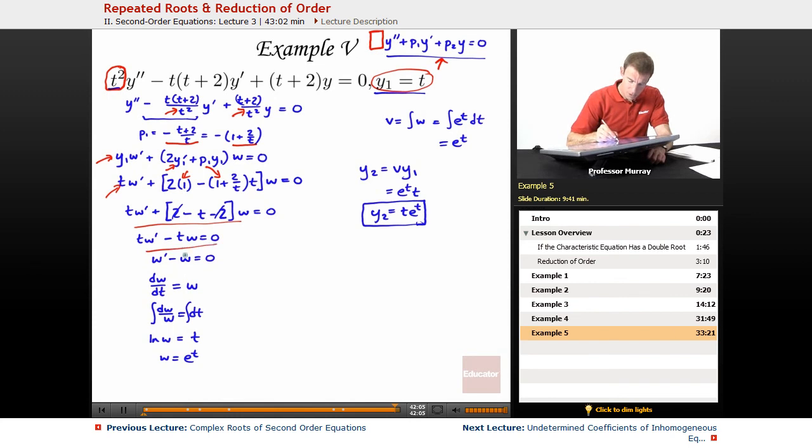Simplify it down. We get to a fairly easy separable differential equation for w. Solve that for w. And then to get v, you have to integrate w. In this case, integrating e to the t doesn't actually change anything, so v is also e to the t. Finally, to get your second solution, you take that v and multiply by y1. So our y1 was t, and finally y2 is just t e to the t. That's the second solution to our differential equation.